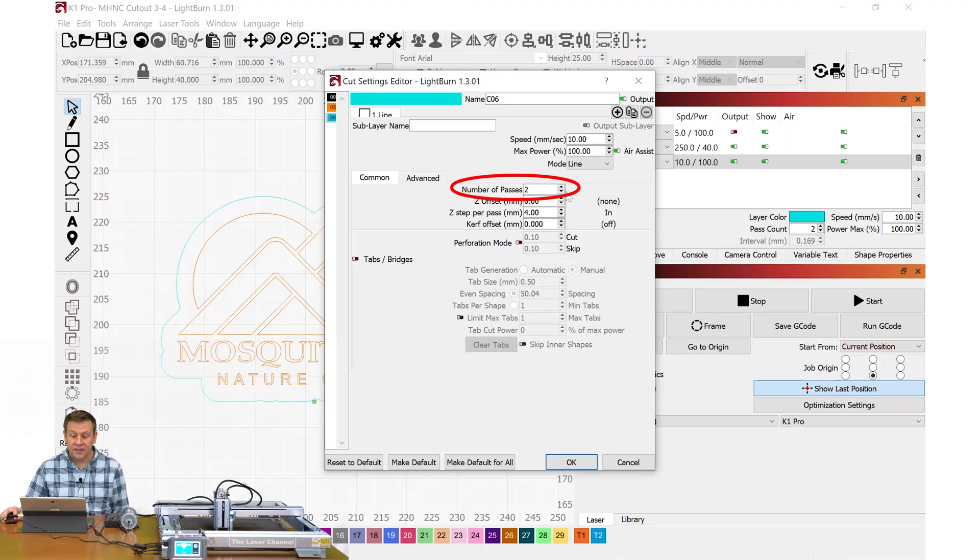Let me take you through some of the settings. In order to use the Z-axis syncing, you do have to use at least two passes. Here, I've got two, and I'm not concerned about the Z-Offset or the Curf Offset. When using this feature, I want to take a look at the Z-Step per pass. Now, this means that after it completes the first pass, this is the distance that it's going to lower the Z-axis, or in our case, the Z-axis is hooked up to the laser module, of course, and I have it set up to lower it by four millimeters.